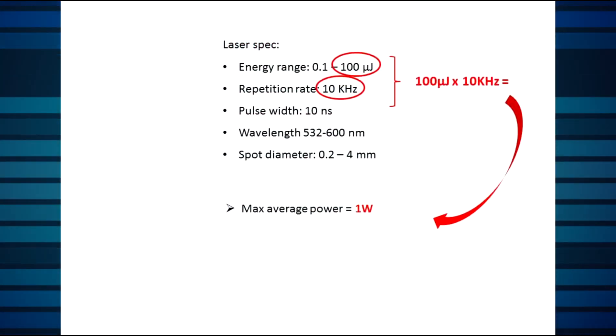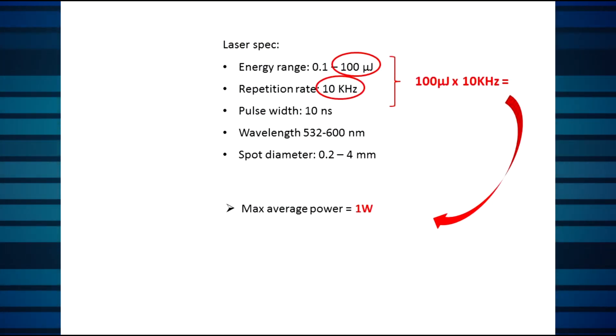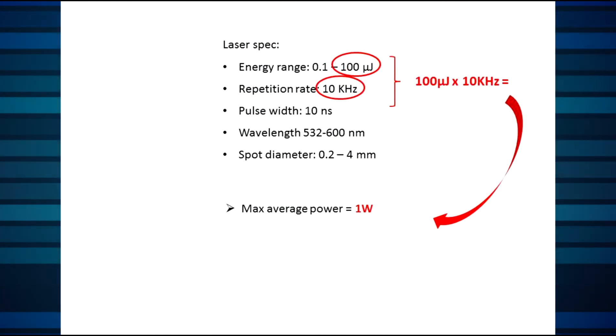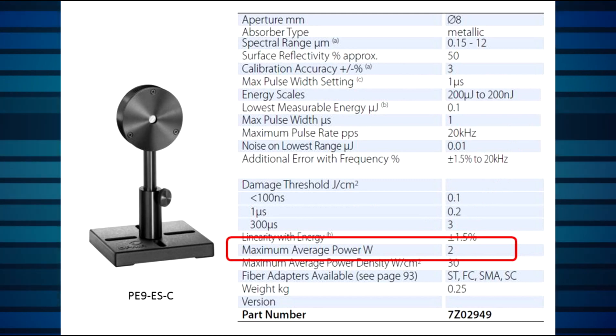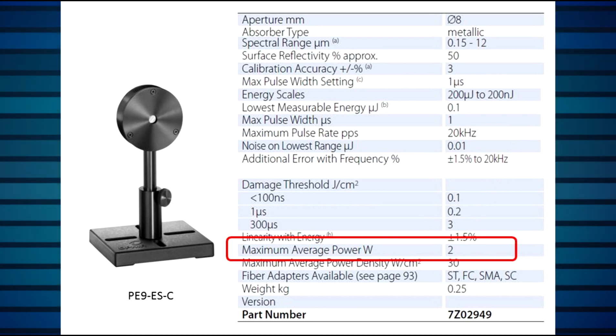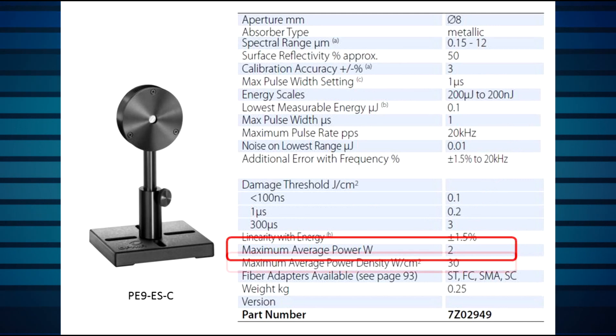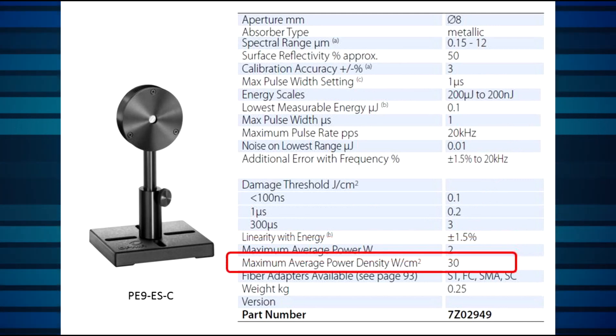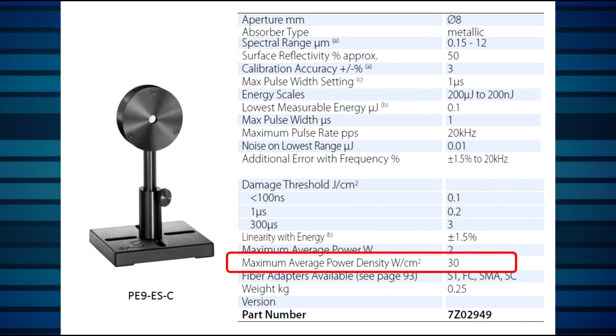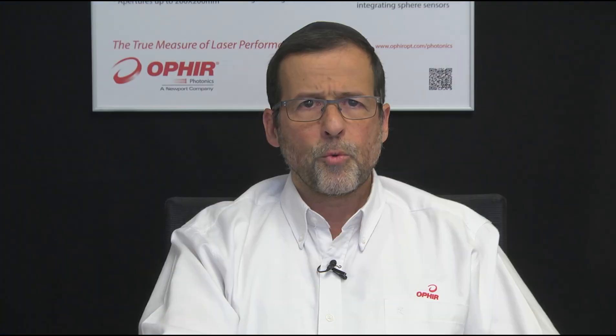Let's first consider power and power density. The maximum average power — the worst case — is 100 microjoules times 10 kHz, or 1 watt. So the PE9ESC sensor is okay so far; it can handle up to 2 watts. The PE9ESC's rated maximum power density is 30 watts per square centimeter. We always recommend a safety margin of about 50%, meaning we want to limit ourselves to about 15 watts per square centimeter if possible.